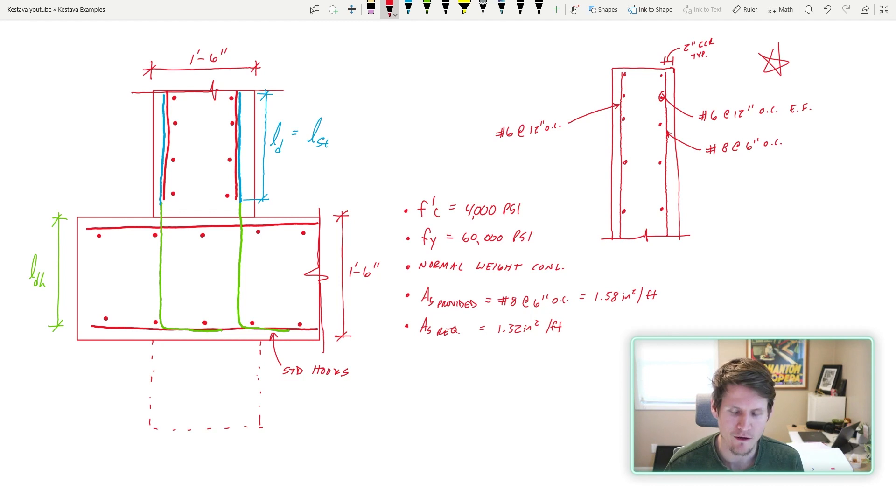Two biggies from previous videos: we determined we needed number eights at six inches on center when we were determining the amount of steel required to get a capacity for our retaining wall. And As required is the amount of steel that we actually needed based on our calculations.